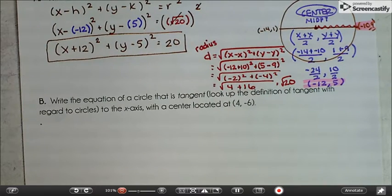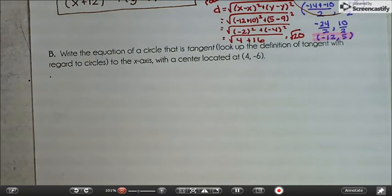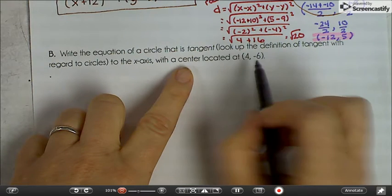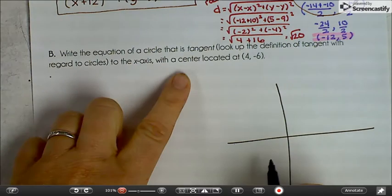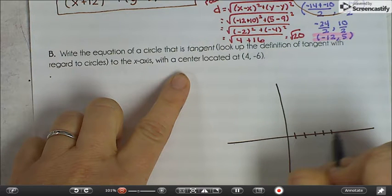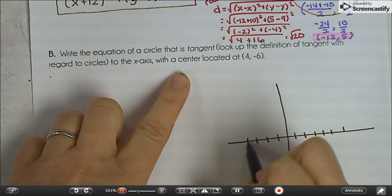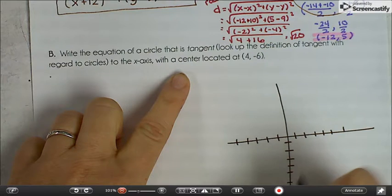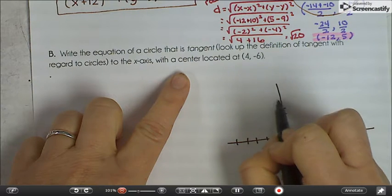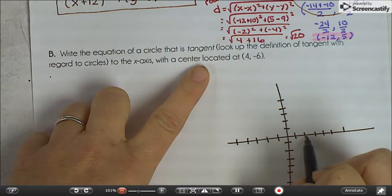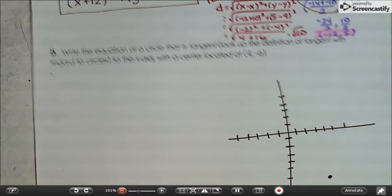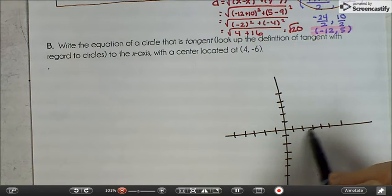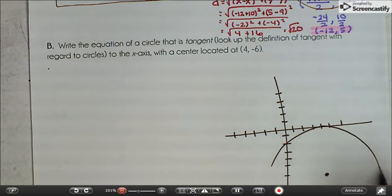And I'm going to start this, but if we don't have time because this runs out, I don't know that I'm going to finish it on another video. Write the equation of a circle that is tangent. Remember, tangent means it touches at one point, tangent to the x axis, with a center located at 4, negative 6. All right. So 4, 1, 2, 3, 4. 1, 2, 3, 4, 5, 6. There's the center. And tangent means this circle is going to touch the x axis at one point.